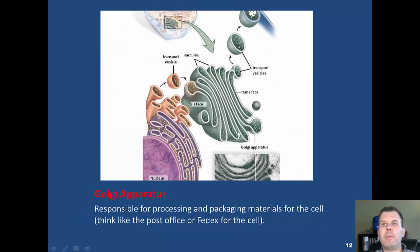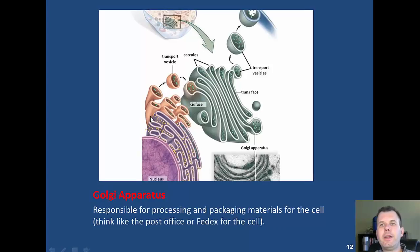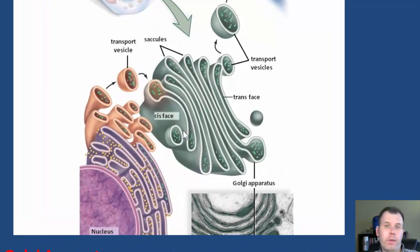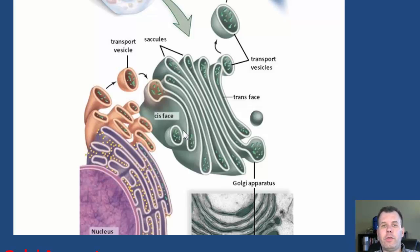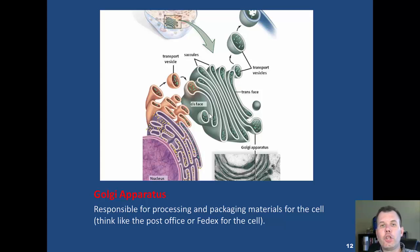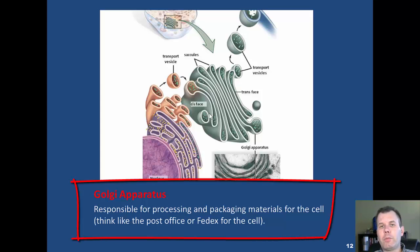Another membrane-bound organelle is the Golgi apparatus. These guys take what is made from the ER and package it up — either for the cell itself to use later for storage, put into vesicles, or package it up to send out to other cells or organisms, like toxins or food. Think of the Golgi body as the post office of the cell.